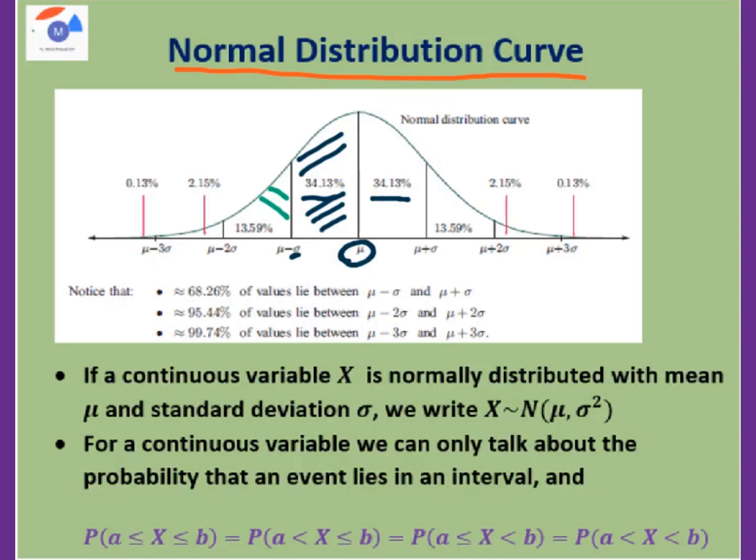This area will be 13.55%. For this area, it will be 2.15%. Then, before mu minus 3 sigma, it will be 0.13%.